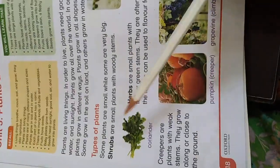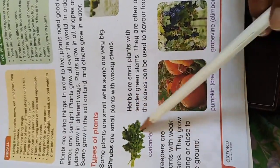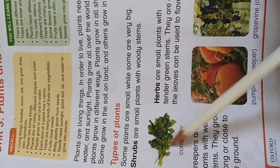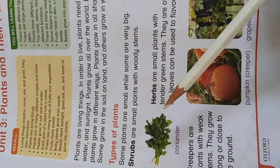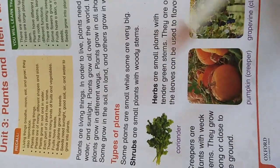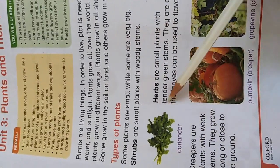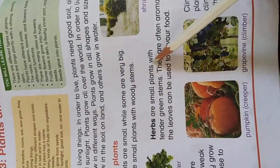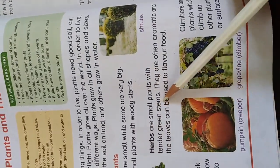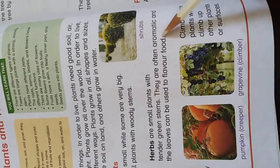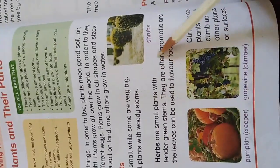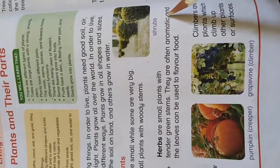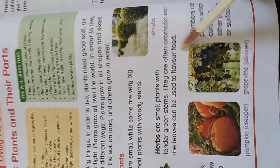The next type is herbs. Herbs are the green things that we eat, like spinach and other green leaves that we use in salads. Herbs are small plants with tender green stems. They are often aromatic, meaning they give a very nice smell, and their leaves can be used to flavor food.